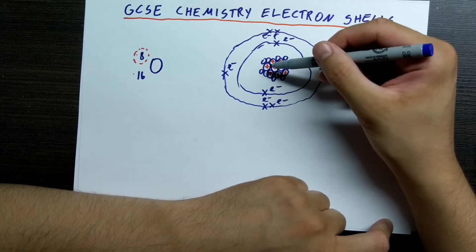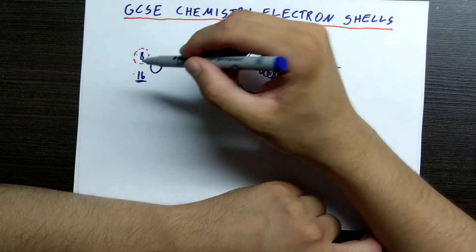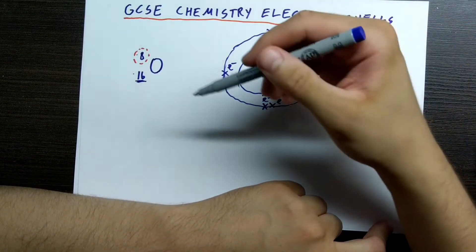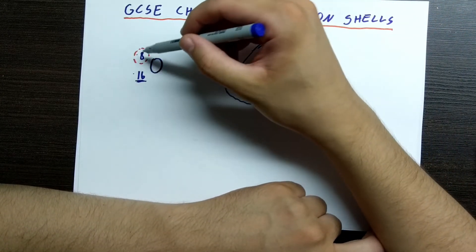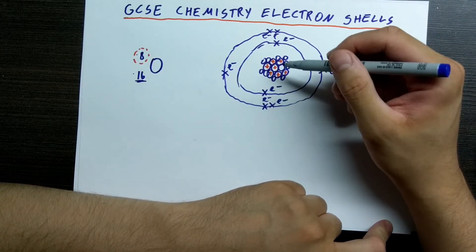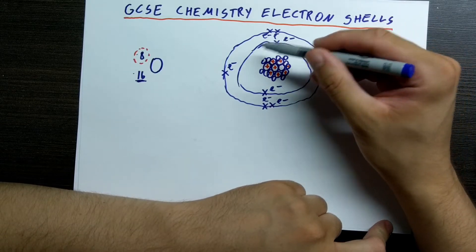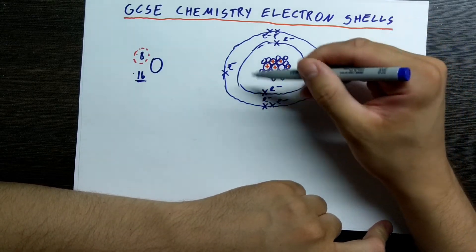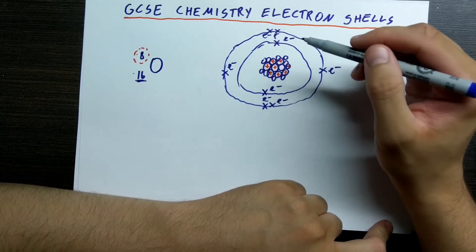Neutrons just carry mass, but no net charge. So neutrons together with protons contribute to the mass number here. But that's not the most important thing. Today we are mostly concerned about the atomic number. So here we have eight protons. Outside the nucleus we have electrons orbiting around the nucleus. Electrons have negative charge.